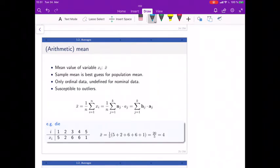The mean value is what most of you would naturally calculate. You add up all the numbers. If I got a die and I got these numbers 5, 2, 6, 6, 1, I add them all up, that's 20, and divide by the number of rolls I had, by 5. So the average, the arithmetic mean, is 4.